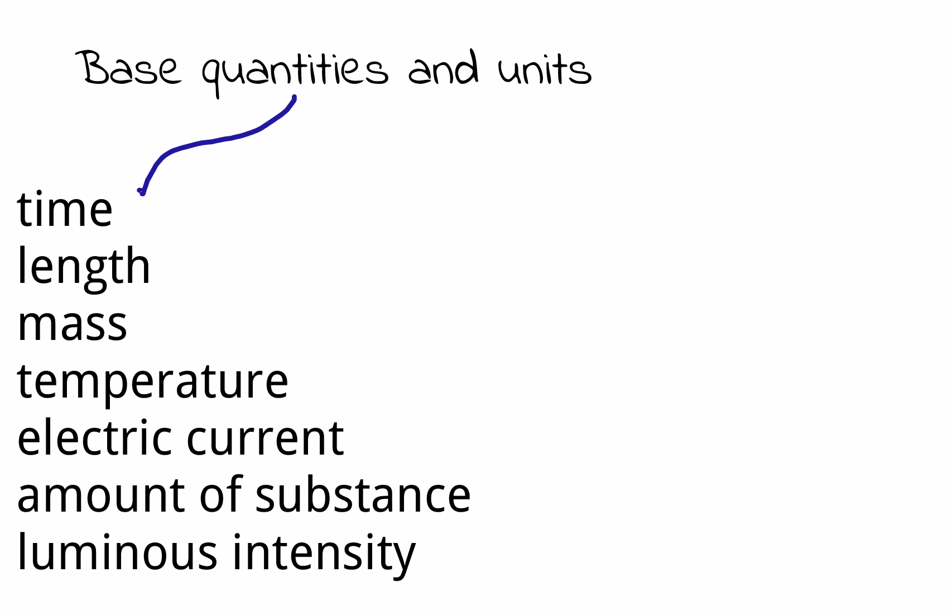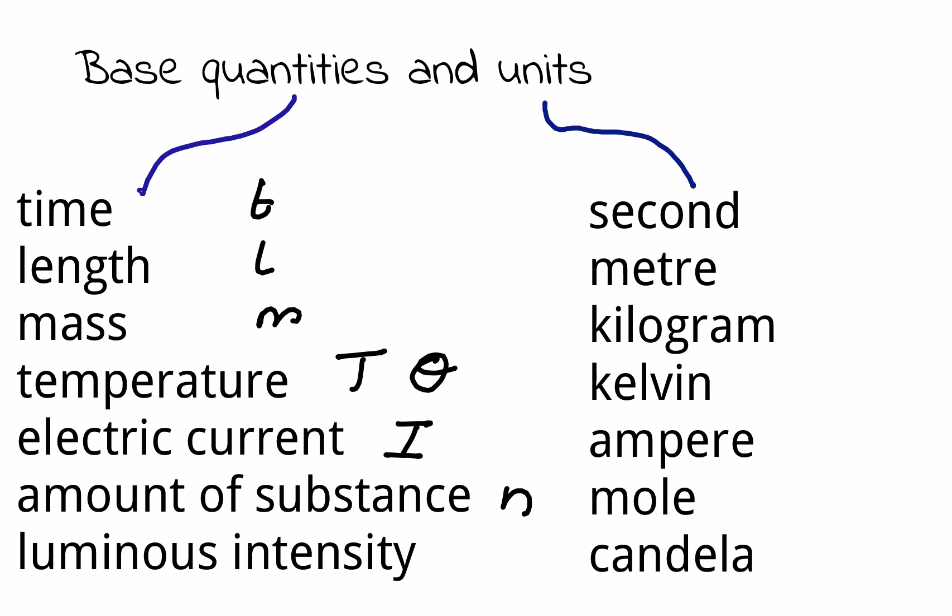The base quantities are: time, given the symbol little t; length, which would be l; mass, small m; temperature, either a capital T or sometimes theta; electric current, I; amount of substance, n; and luminous intensity, which isn't used at A level. Each of these seven base quantities have their SI or System International unit.